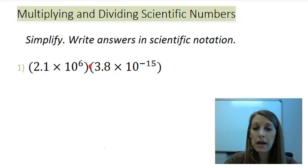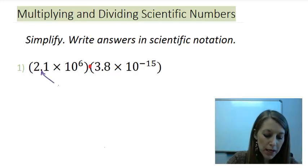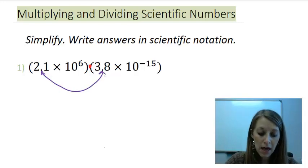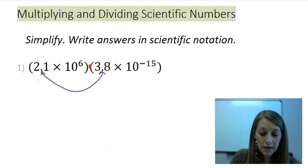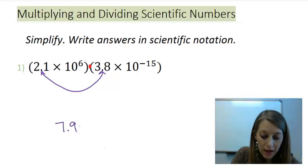I can rearrange it in however format I want to. What I'm going to do is put my like pieces together. I'm going to multiply 2.1 times 3.8, and yes, I will use my calculator for that, but you can do that by hand too. The answer to that comes up to 7.98.